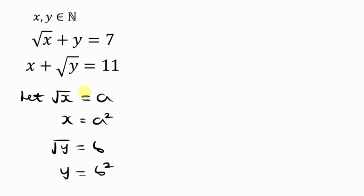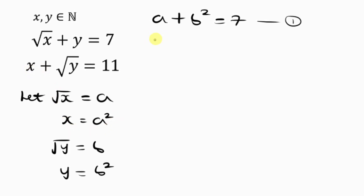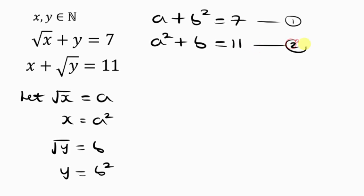Now let's rewrite the equations. The square root of x is a, and y is b squared, so equation 1 becomes: a plus b squared equals 7. For the second equation, x is a squared and the square root of y is b, so equation 2 is: a squared plus b equals 11.